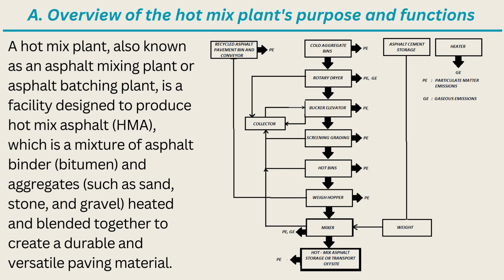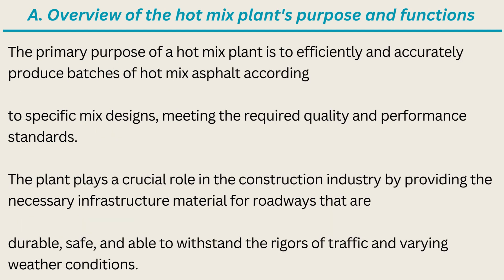A hot mix plant, also known as an asphalt mixing plant or asphalt batching plant, is a facility designed to produce hot mix asphalt (HMA), which is a mixture of asphalt binder (bitumen) and aggregates such as sand, stone, and gravel, heated and blended together to create a durable and versatile paving material. Hot mix asphalt is used for highways, city streets, airport runways, and parking lots. The primary purpose is to efficiently produce batches of HMA meeting required quality and performance standards, providing infrastructure material for roadways that are durable, safe, and able to withstand traffic and varying weather conditions.